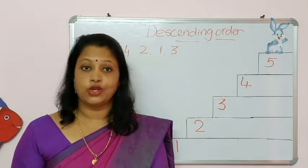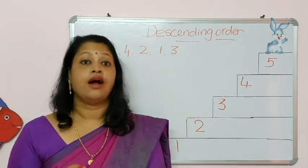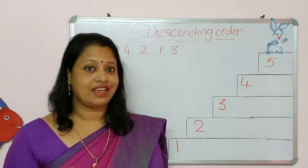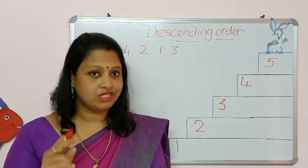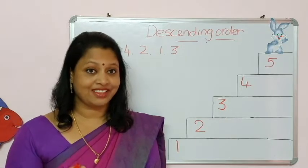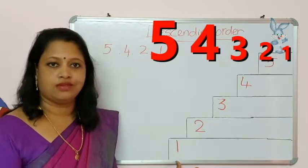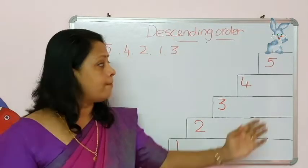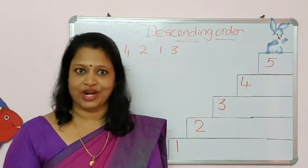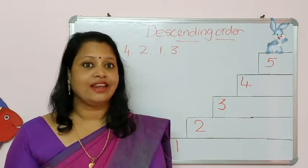Children, now we want to help Mr. Bunny to go back to his home. Remember, now he is upstairs. So what we have to do? We have to help him come down using descending order. Descending order means arranging numbers from big to small. And children, we already learned backward counting — we always use backward counting in descending order.